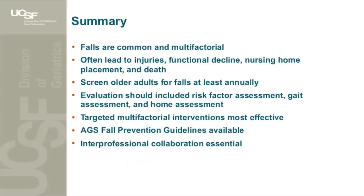To summarize: falls are common and multifactorial, with devastating consequences including injuries, functional decline, nursing home placement, and death. It is important to screen older adults for falls at least annually — I ask at every visit. Evaluation should include assessments of risk factors, gait, and the home. Targeted multifactorial interventions are most effective. There are evidence-based fall prevention guidelines available, and interprofessional collaboration is essential — all health professions have a role in fall prevention.